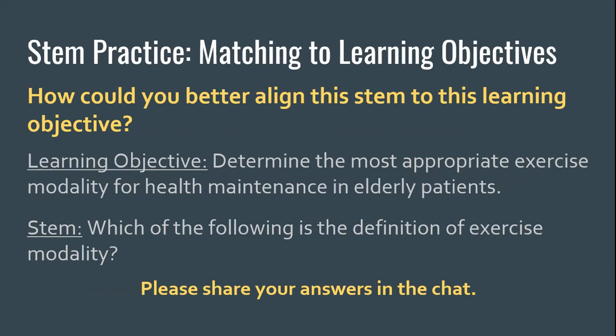Let's practice matching learning objectives to stems. The learning objective is: 'Determine the most appropriate exercise modality for health maintenance in elderly patients.' The stem is: 'Which of the following is the definition of exercise modality?' That stem isn't completely inappropriate anywhere on the test, but how might you rephrase or create a new question that better aligns with that learning objective? Please share your answers in the chat.